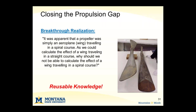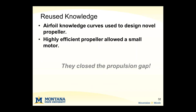To close the propulsion gap, they had a breakthrough realization: a propeller is really just a wing turned on its side and rotating rather than stationary. If that was the case, they could use the existing airfoil curves to design a pretty efficient propeller. The cross section of the propeller changes as you move from the rotating hub out to the tip because you have different air velocities at different points, so the most efficient airfoil varies. This highly efficient propeller allowed for a much smaller, lighter motor.